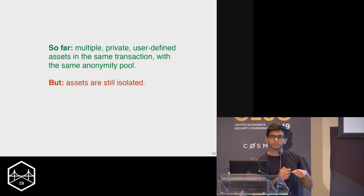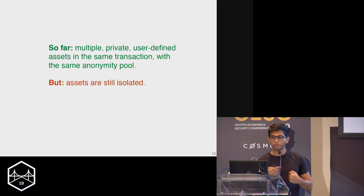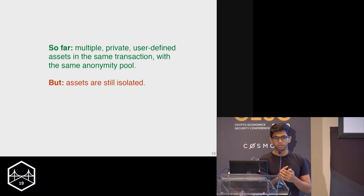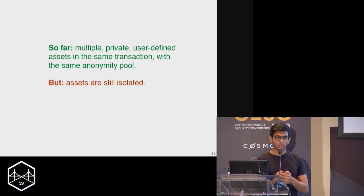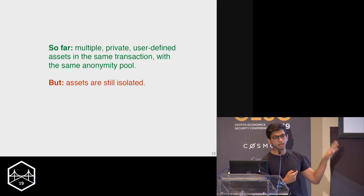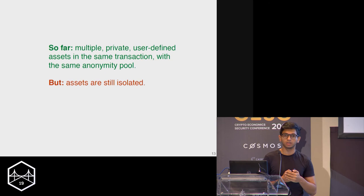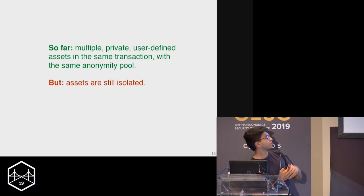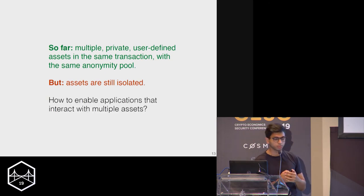So far, we have multiple user-defined assets in the same transaction with the same anonymity pool on the same blockchain. But the problem is that assets are still isolated — there's no way for them to interact, and there's no programmability in the equation. Let's see how we can generalize that construction to support programmability.